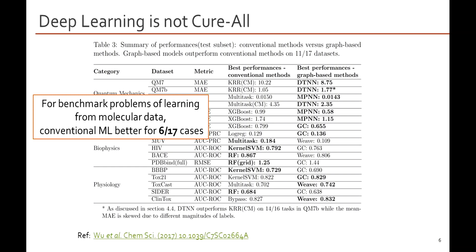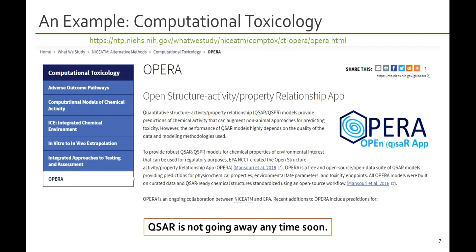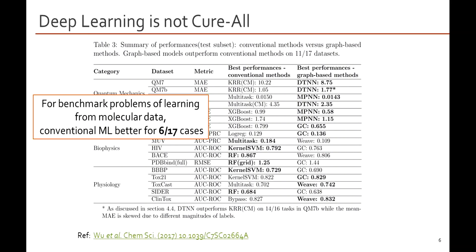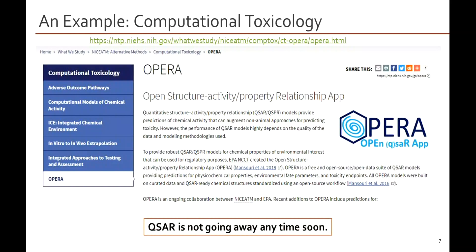In that study, conventional machine learning was better for about a third of the tasks, and in fact all of them within the biophysics domain. There's still a lot of reason to use conventional ML models. Looking at work from places like the NIH and their collaborative center for toxicology modeling, you can use tools like OPERA, which combines many different machine learning models built from researchers around the world to predict properties based on very high-quality toxicity datasets. QSAR is something you need to know about, especially for smaller datasets.